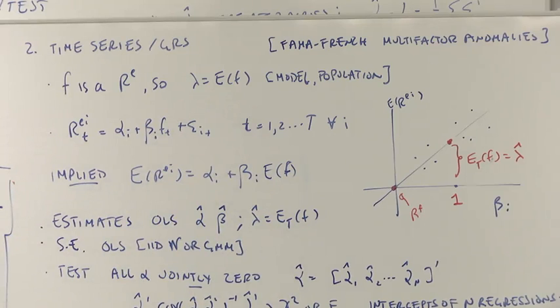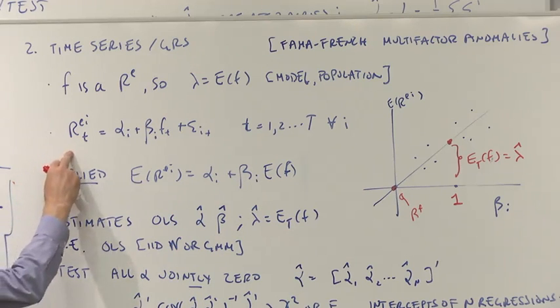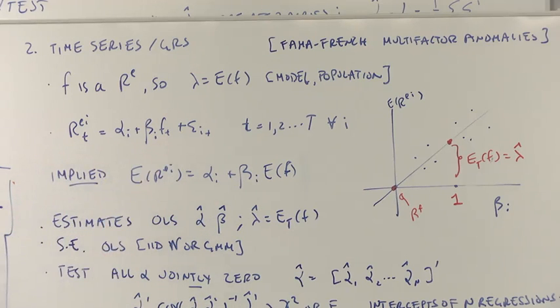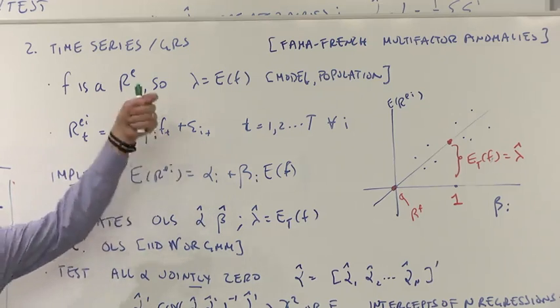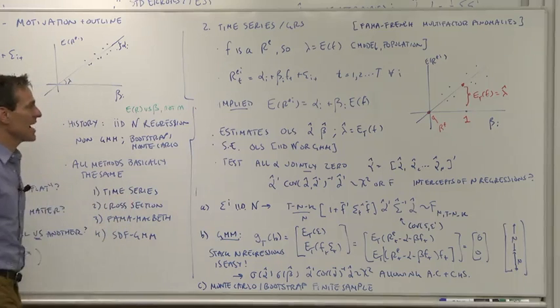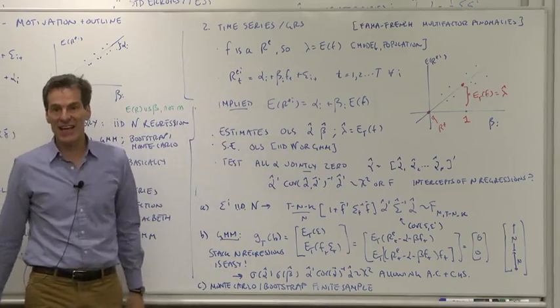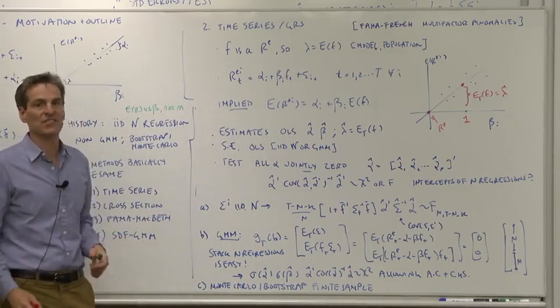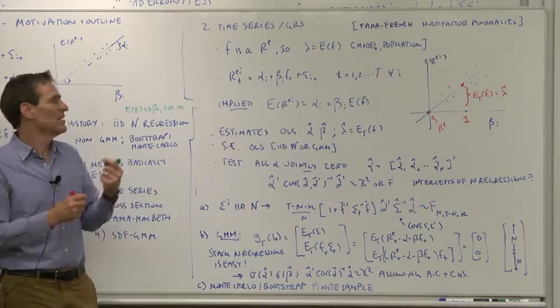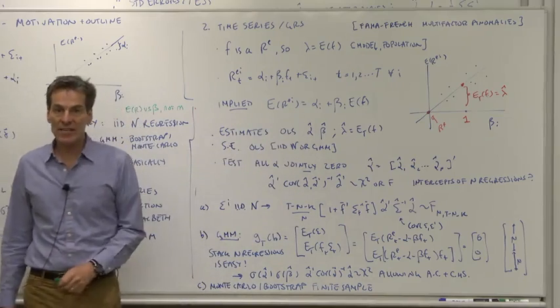So what do we do? We simply run the return on the factor. That's for each asset I. You run this over time, hence a time series regression. But we're not here really to understand that. We're here to understand the cross-section. We're here to understand how expected returns relate to betas.